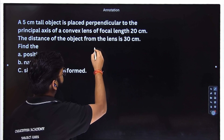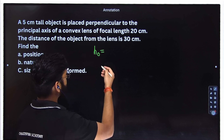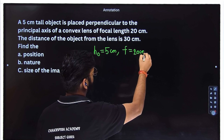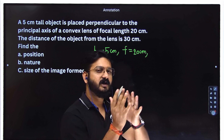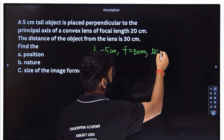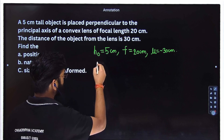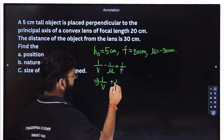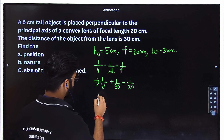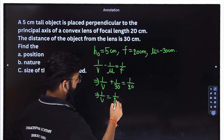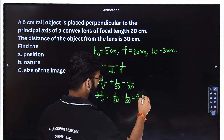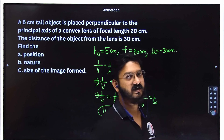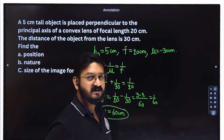Object height is 5 centimeter, so H_O is plus 5. Focal length is plus 20 centimeter because this is a convex lens. Object distance is minus 30 centimeter because the object is on the left side. Applying the lens formula: one by V minus one by U equal to one by F. So one by V minus minus one by 30 becomes one by V plus one by 30 equal to one by 20. Solving, V equals 60 centimeter. The image is formed on the right side, which is why it is positive.